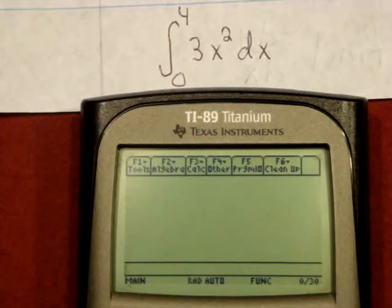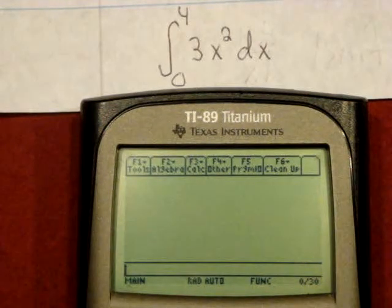So you're given the integral of 3x squared dx evaluated from 0 to 4.